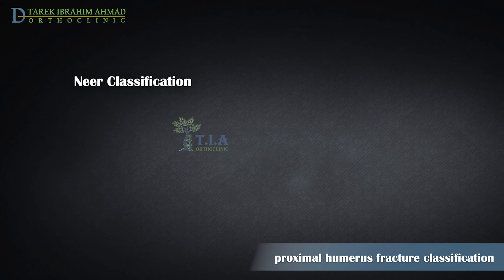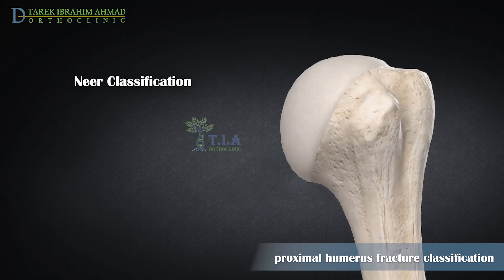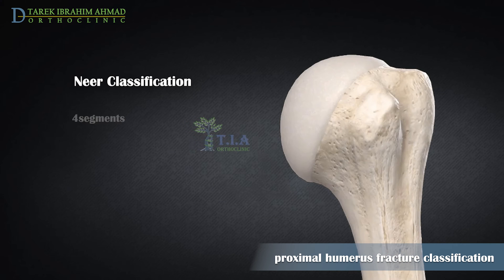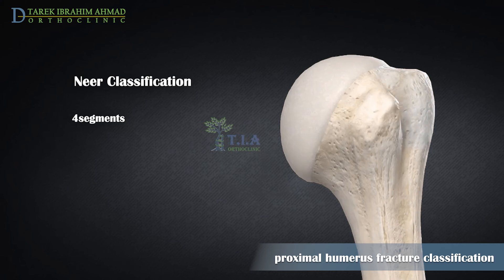Radiographs are used to classify the fracture in terms of the displacement of the parts affected. The most widely employed is the Neer classification. This classification system is based upon the anatomical relationship of the four segments.